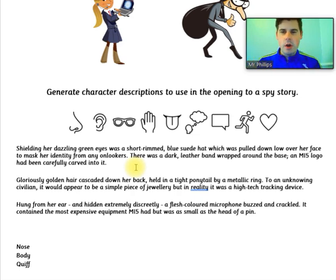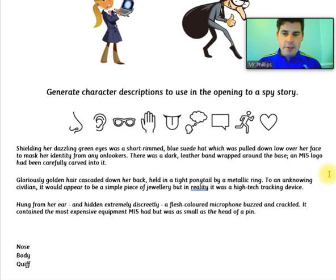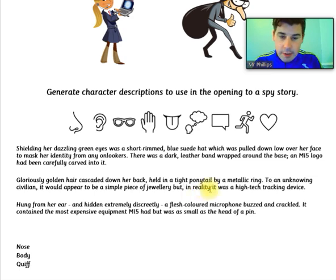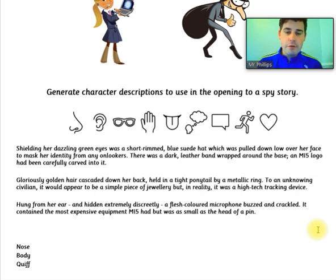Last time we didn't get to the criminal, so that's what we're doing today — we only managed to get the spy lady done. We've tried to use a variety of lenses, make sure all the structures are different, and do multiple sentences for each unit of description. What we wrote for the lady spy is: shielding her dazzling green eyes was a short-rimmed blue suede hat, which was pulled down low over her face to mask her identity. There was a dark leather band wrapped around the base; an MI5 logo had been carefully carved into it. Gloriously golden hair cascaded down her back, held in a tight ponytail by a metallic ring. To an unknowing civilian it would appear to be a simple piece of jewellery, but in reality it was a high-tech tracking device. Hung from her ear and hidden extremely discreetly, a flesh-coloured microphone buzzed and crackled — it contained the most expensive equipment MI5 had, but was as small as the head of a pin.